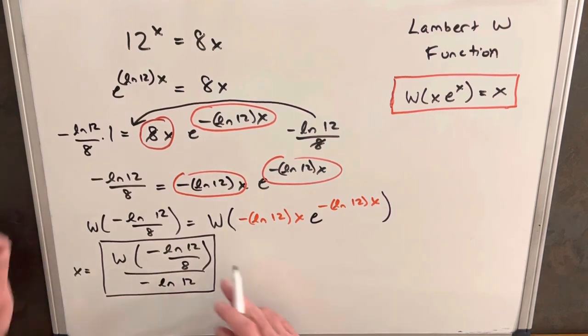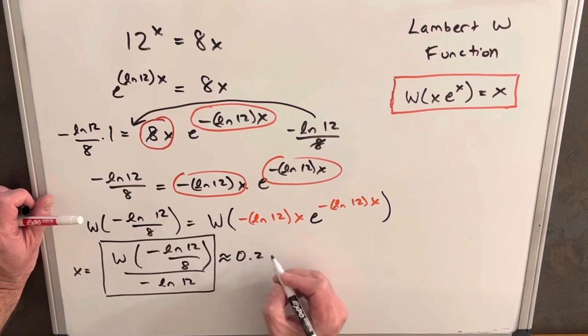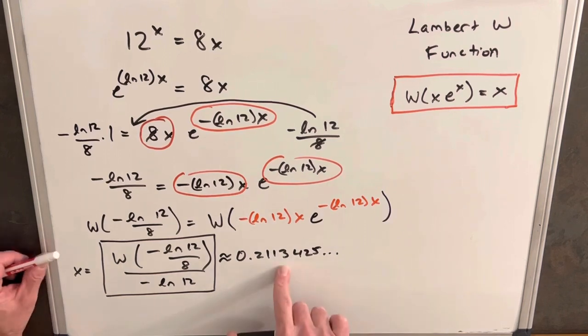So I used Wolfram Alpha to calculate this thing, and what we get is approximately 0.2113425. And the question now is how do we know that this is the only real solution, or are there other real solutions we need to look at?